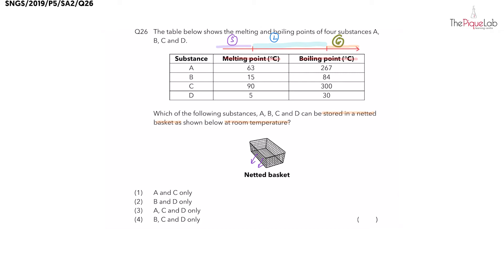At room temperature, let's write that down. We can assume room temperature to be 30 degrees Celsius. So what we need to do is look for which substances will be solid at room temperature, which is 30°C, by inserting 30 degrees onto the number line.